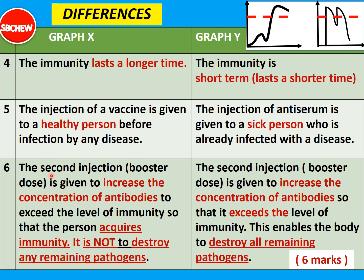Sixth difference concerns the function of the booster dose — the second injection. For Graph X, the second injection is given to increase the concentration of antibodies to exceed the level of immunity so the person acquires immunity. It is not to destroy remaining pathogens since the person is healthy. For Graph Y, the second injection helps the person acquire immunity but also to destroy all remaining pathogens that have entered the body of the sick patient.